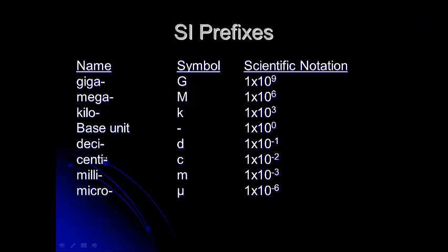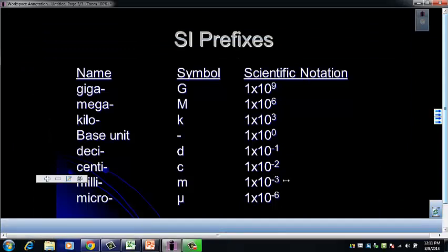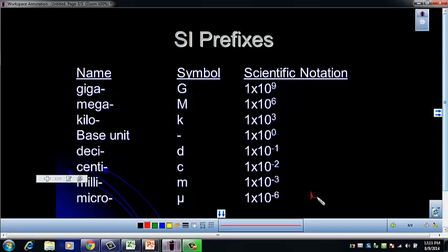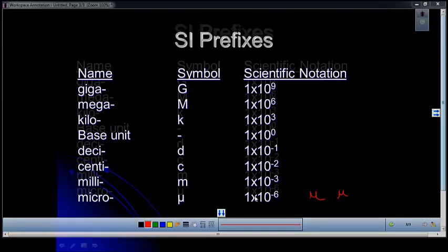And what you want to do, if you have to write it, is you want to write kind of a u with a little tail. It doesn't matter which side to me you put it on. I usually just make a little, you just don't want it to look like an M because that would confuse me. I want to see micro and know that it's micro. So the scientific notation for that is 1 times 10 to the negative 6th.